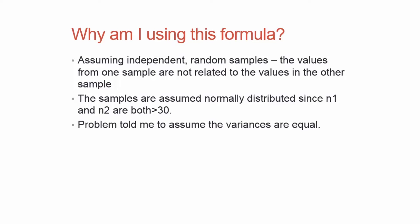So why am I using this formula? I'm assuming independent random samples, meaning the values from one sample are not related to the values in the other sample — they're separate populations. The samples are assumed to be normally distributed since both n1 and n2 are greater than 30. And the problem told me to assume the variances are equal, so that tells me a pooled variance t-test is what I want to use, where I can combine the variances.